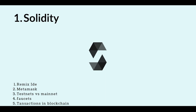Smart contracts are built using Solidity, and there are other languages like Vyper, which is similar to Python. Different blockchains use different programming languages — for example, Solana uses Rust, but on Ethereum, Polygon, Matic, and other EVM-compatible chains, we use Solidity. While learning Solidity, we'll also be learning about Remix IDE, where we write our code and deploy it.